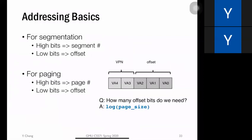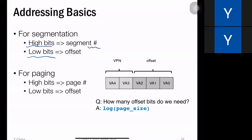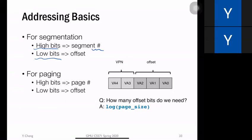Now let's cover some fundamentals of page addressing. Recall from the last lecture that segmentation divides a virtual address into two parts: high bits and low bits. The high bits represent the segment ID used to locate the corresponding segment, and the low bits are the offset within that segment.